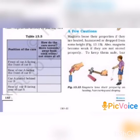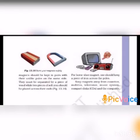Magnets become weak if they are not stored properly. To keep them safe: bar magnets should be kept in pairs with their unlike poles on the same side. They must be separated by a piece of wood, while two pieces of soft iron should be placed across the ends.